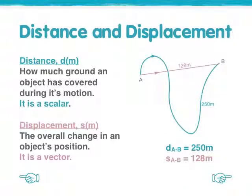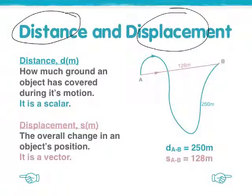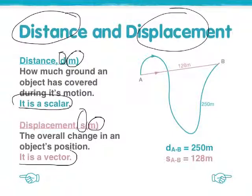First, let's review some basic facts. We have distance and we have displacement. The symbol for distance is a small d, and for displacement it's s. Both are measured using metres. And just a reminder, distance is a scalar and displacement is a vector.